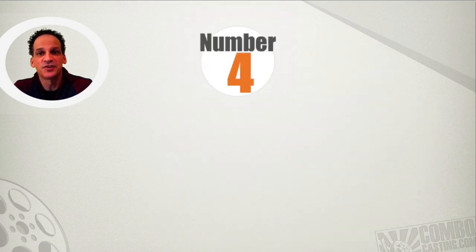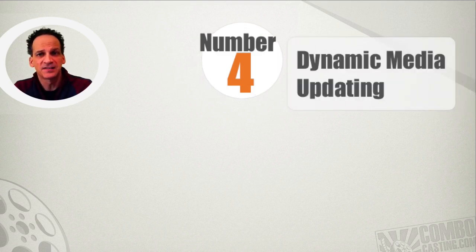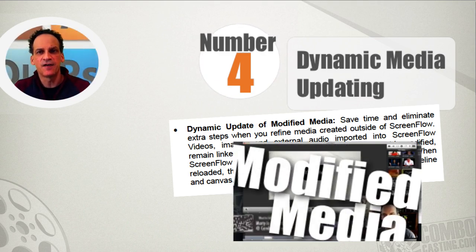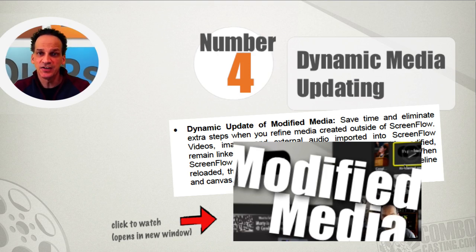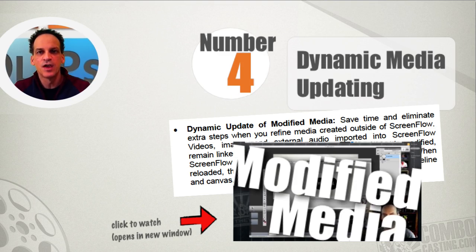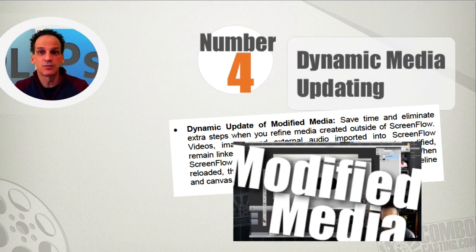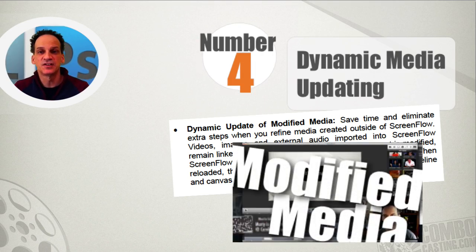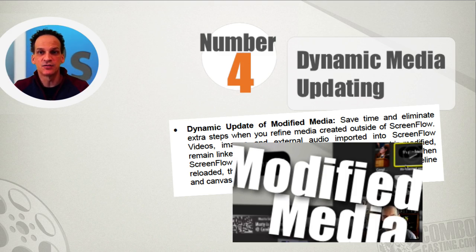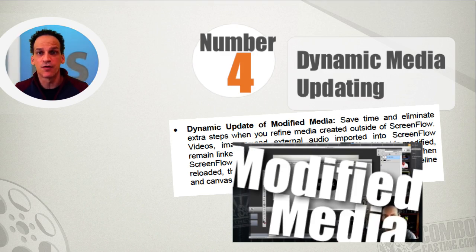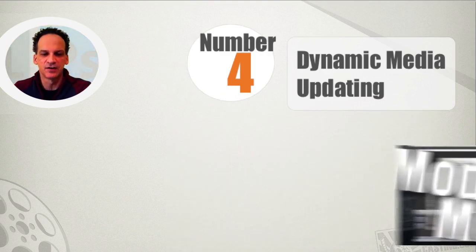The number four top feature in ScreenFlow 4 is dynamic media updating. What this allows you to do is edit a file — say an image file in Photoshop — save it, and then go back to your ScreenFlow project and update it with just a click. This is really useful if you have a standard set of elements in an intro or transition where you need to change a title or number but everything else stays the same. Go update it in Photoshop, then update it in ScreenFlow — all the work's done for you. Very valuable, especially for a video series.